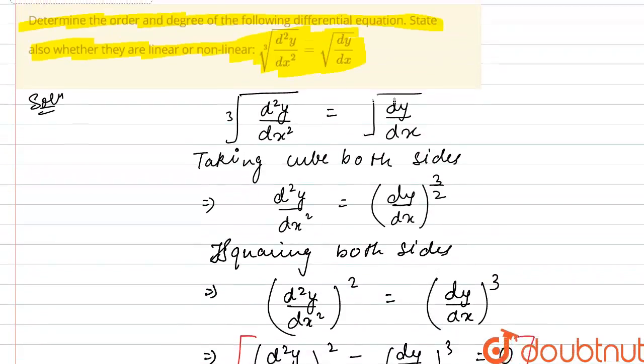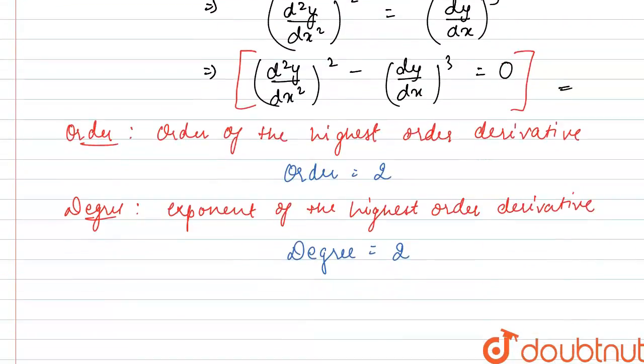Now, we need to check whether this is linear or non-linear. For a differential equation to be linear, the exponent of the dependent variable and all its differential coefficients is 1. Here we are having two differential coefficients, one is this second order and one is this first order. Both these are having exponent as 2 and 3, which is greater than 1. So we can say that this is non-linear differential equation.